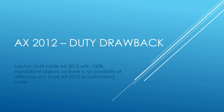Hello, my name is Jason Green, and I'm getting ready to demo the duty drawback vertical that has been added to AX2012. This solution was built inside of AX2012 with 100% standalone objects, so there's no possibility of affecting any base AX2012 code or any customized code. All these objects are net new and do not affect any existing objects, so you can add this on to any install of AX2012 without any possibility of stepping on any customized code.